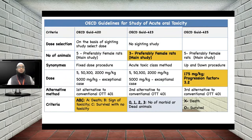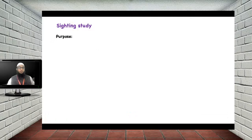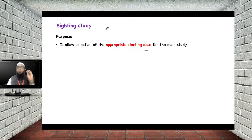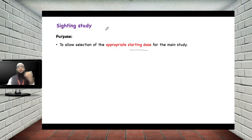Now let us understand the sighting study used in OECD 420. The purpose of the sighting study is the selection of an appropriate starting dose for the main study. Instead of randomly giving the dose, you first perform the sighting study in a single animal, observe the result, confirm with one additional animal if needed, and then use that selected dose for the main study with three or five animals.